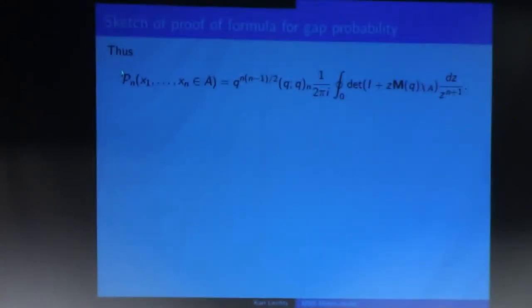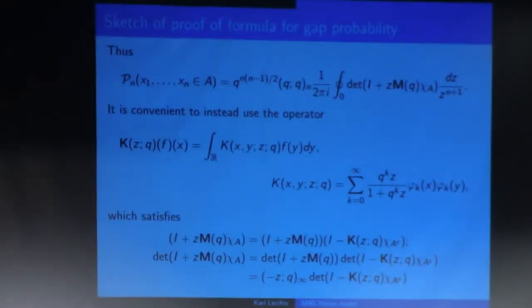So, if I want to know the gap probability for N particles, I just need to pick out the Nth term in that sum, which you can do by integrating around the origin. So I integrate around the origin, DZ divided by Z to the N plus 1. That'll pick out the Nth term. So that's a formula for the gap probability. That's not the one that I had on the earlier slide. So it turns out this one, somehow, is not so convenient for asymptotic analysis.